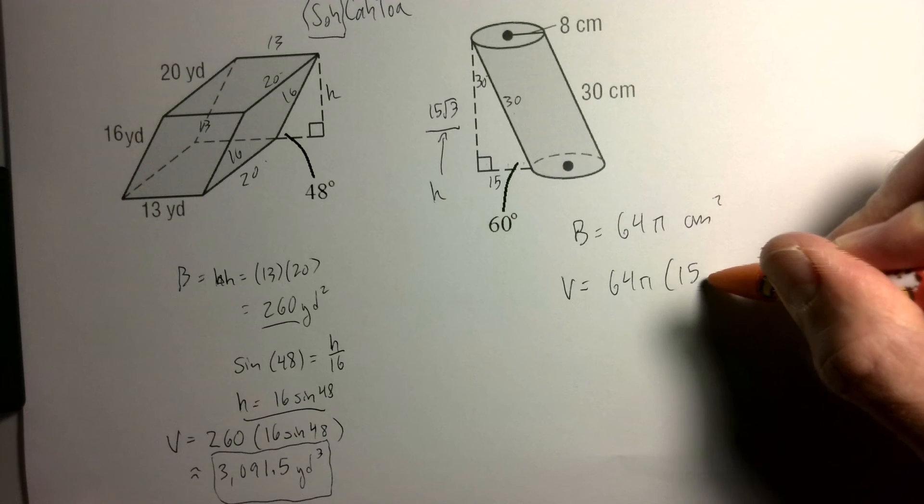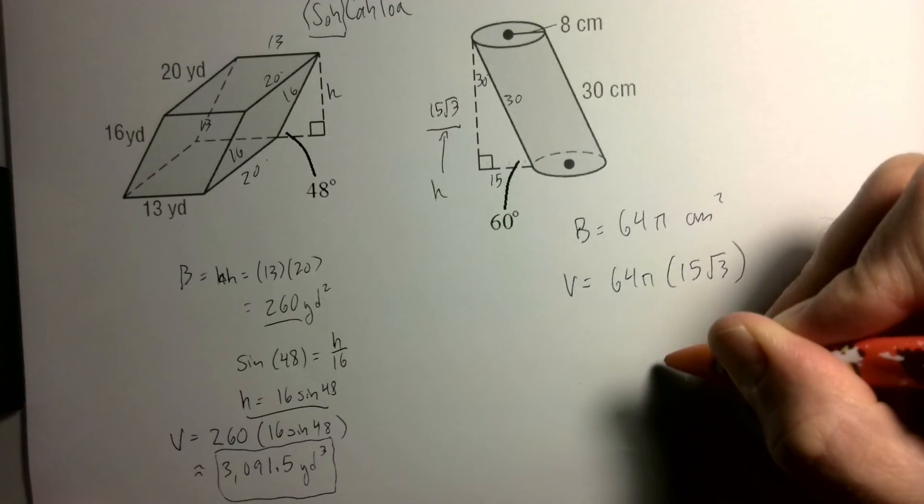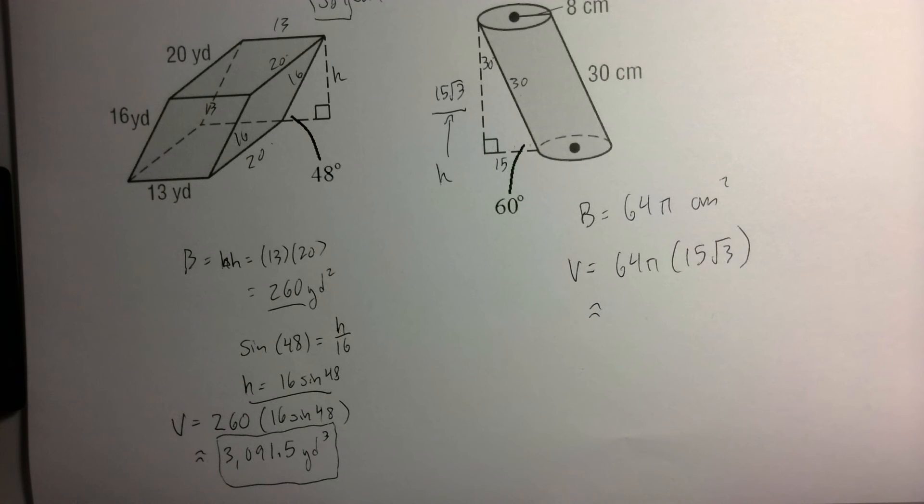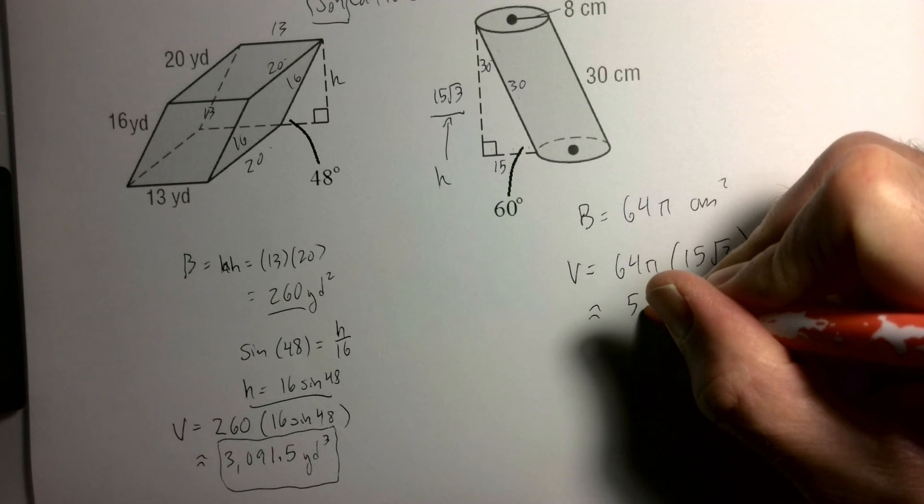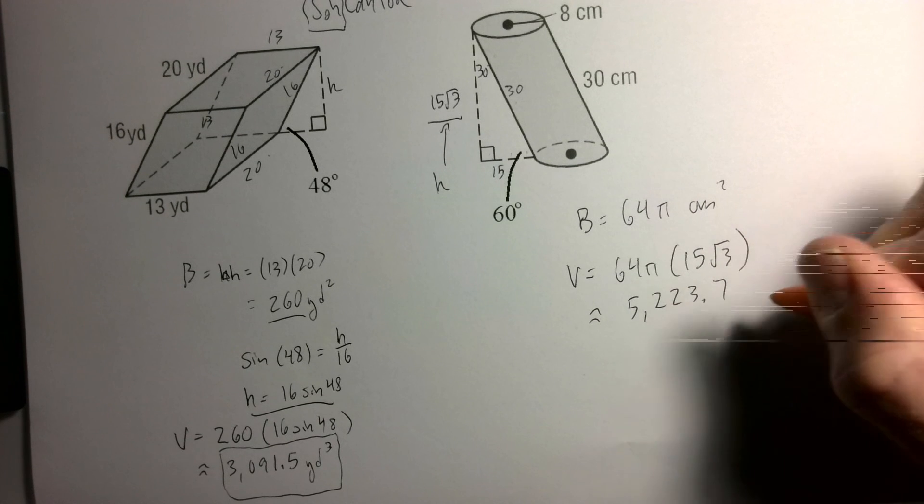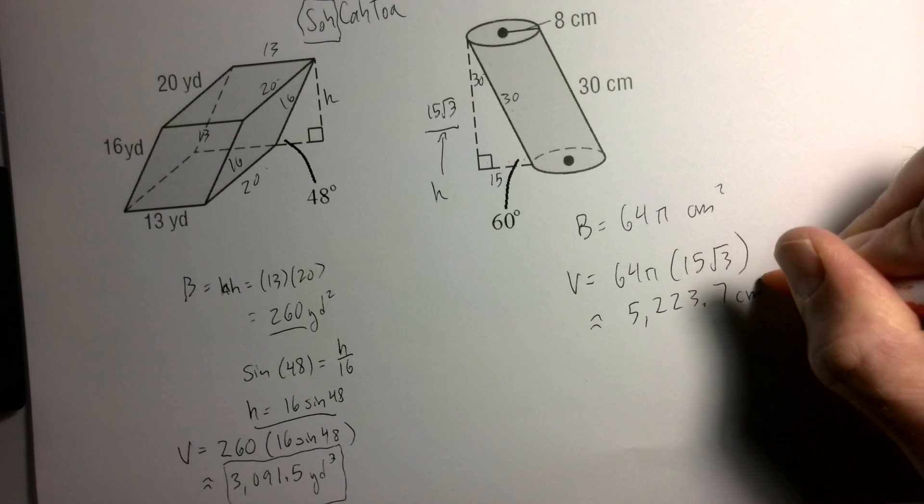Oh wow, very interesting number. Let's see what that is as a decimal just to get an idea of how big that thing is. Square root of 3 - big number - 5223.7. And this is cubic centimeters.